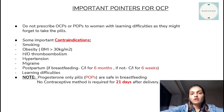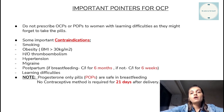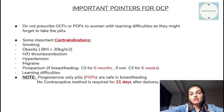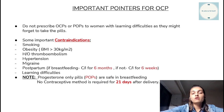Females with learning difficulty should not be prescribed oral contraceptive pills because they might forget to take the pills regularly, which could lead to contraceptive failure. Postpartum females should not be prescribed the combined pills. If she is breastfeeding, it should not be prescribed for 6 months because the estrogen component interferes with breast milk production. If she is not breastfeeding, it should not be prescribed for 6 weeks.